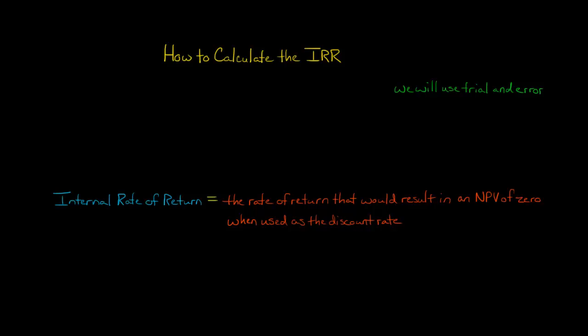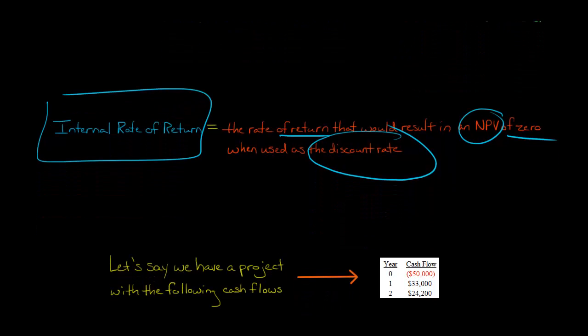In this video, I want to show you how to calculate the IRR using trial and error. So the IRR, which stands for Internal Rate of Return, is the rate of return that would result in an NPV of zero for a project when it's used as a discount rate for that project.